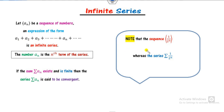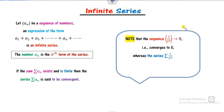For example, consider the term 1 over 2^n. One is called the sequence and the other is the series. Clearly, 1 over 2^n converges to 0 as n approaches infinity. Here 0 is unique and finite, so we say it is a convergent sequence. On the other hand, how do you find the series? It runs from 1 to infinity, or you can say from 0 to infinity.